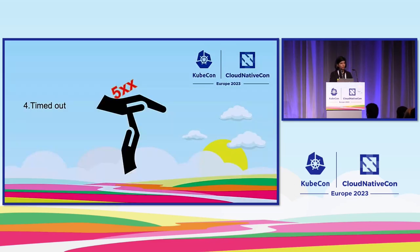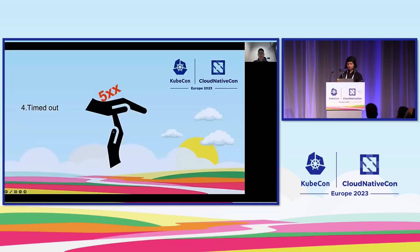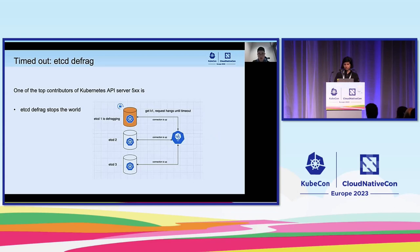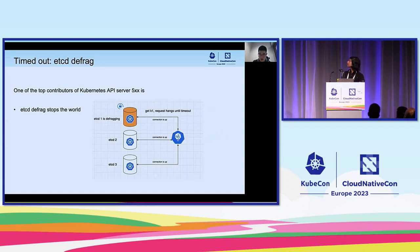That brings us to the fourth issue. Let's hear from Chao about timeouts. One of the top contributors to Kubernetes API server 5xx errors is etcd online defrag. When the API server tries to get an object using a key, if the request hits an etcd server that is defragging, the request will hang until timeout.